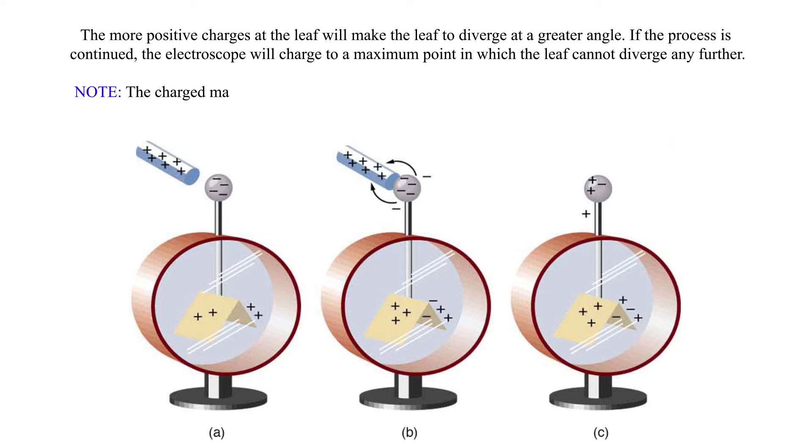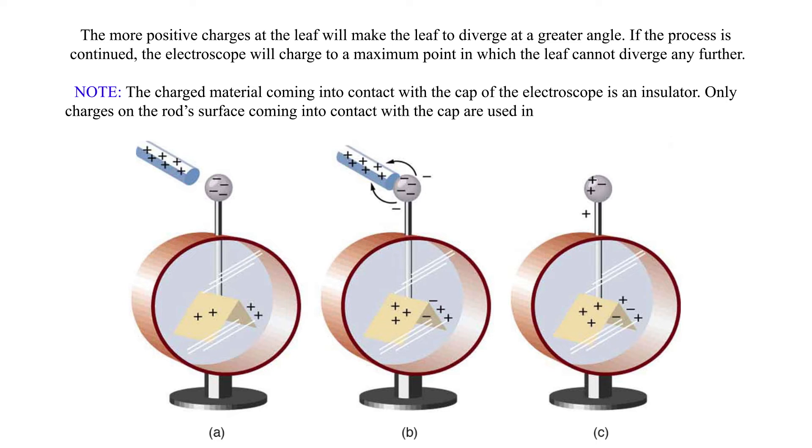Note: The charged material coming into contact with the cap of the electroscope is an insulator. Only charges on the rod's surface coming into contact with the cap are used in neutralizing the charges induced on the cap.